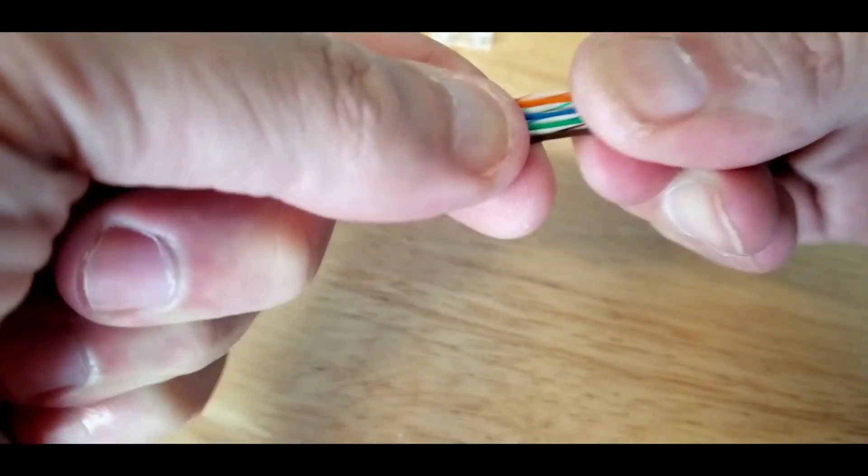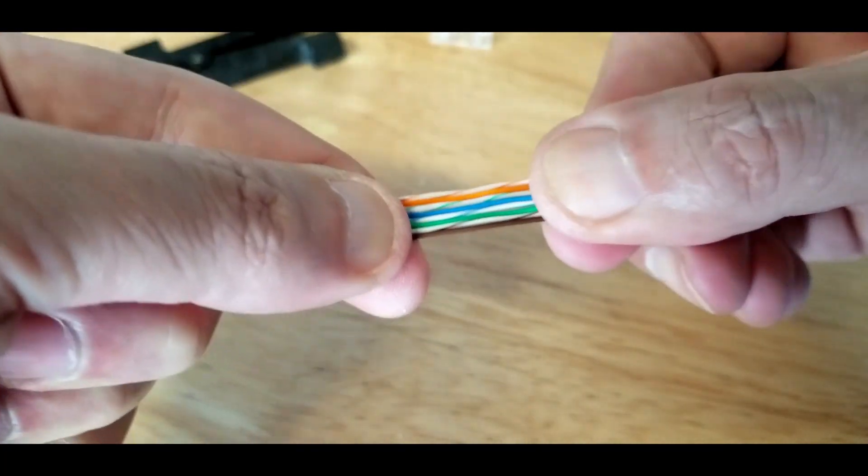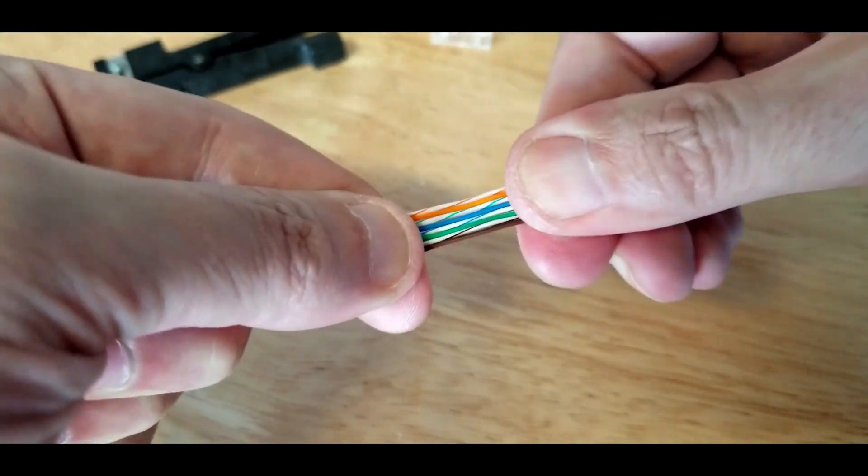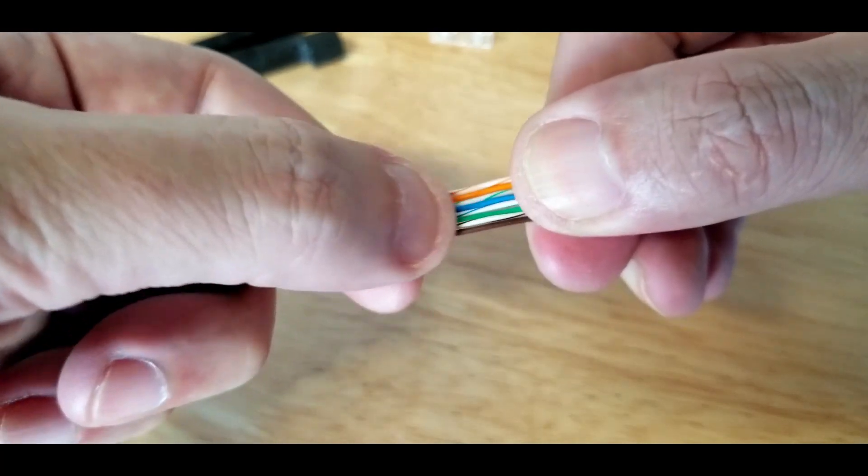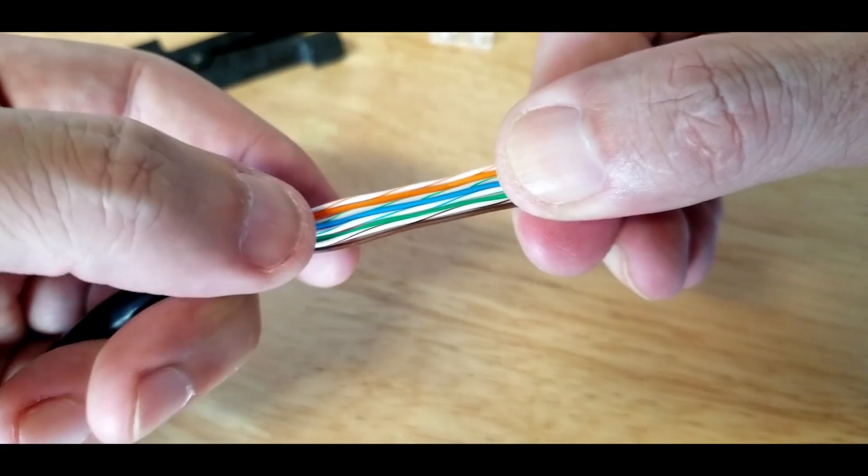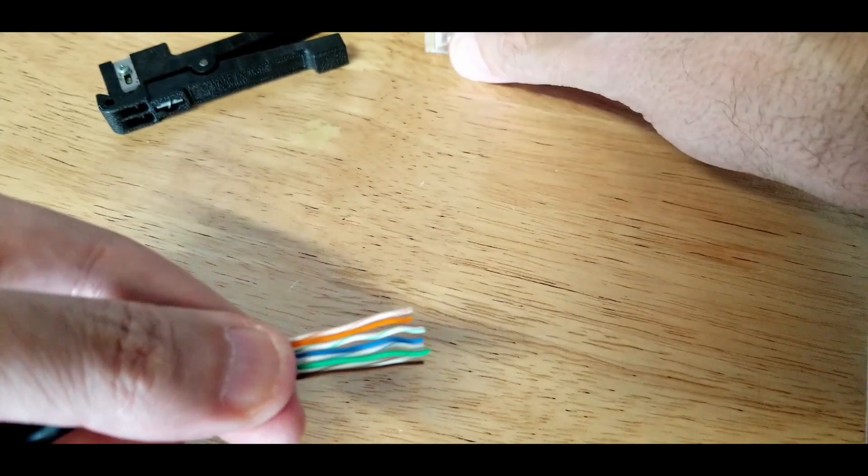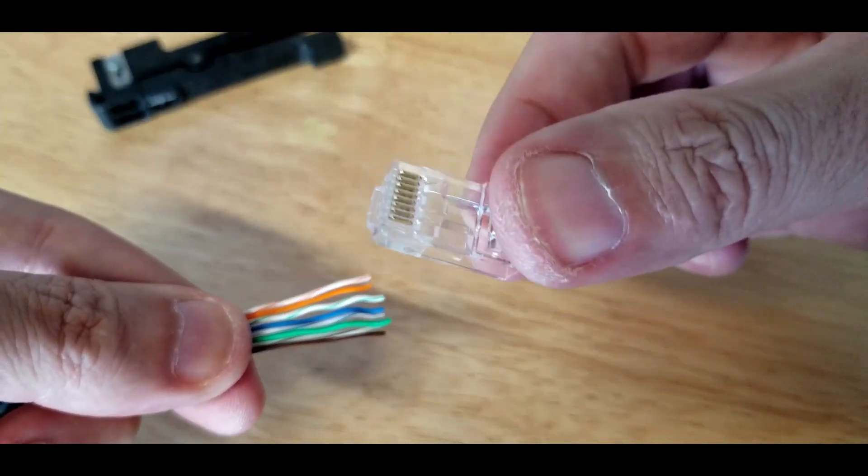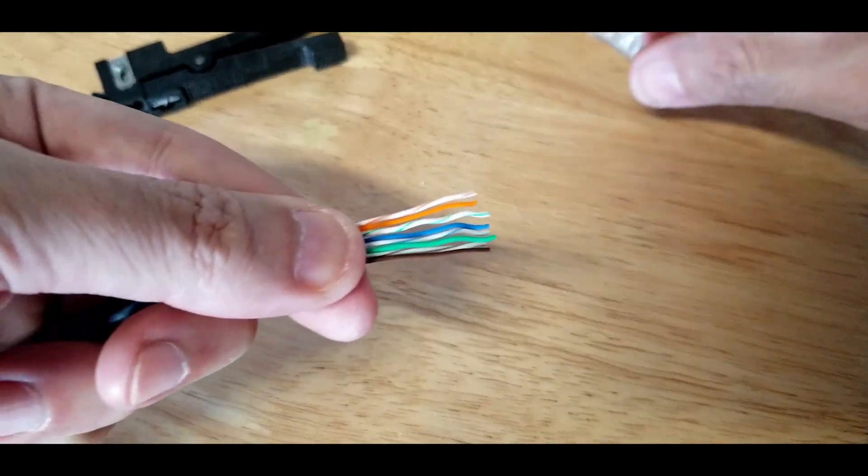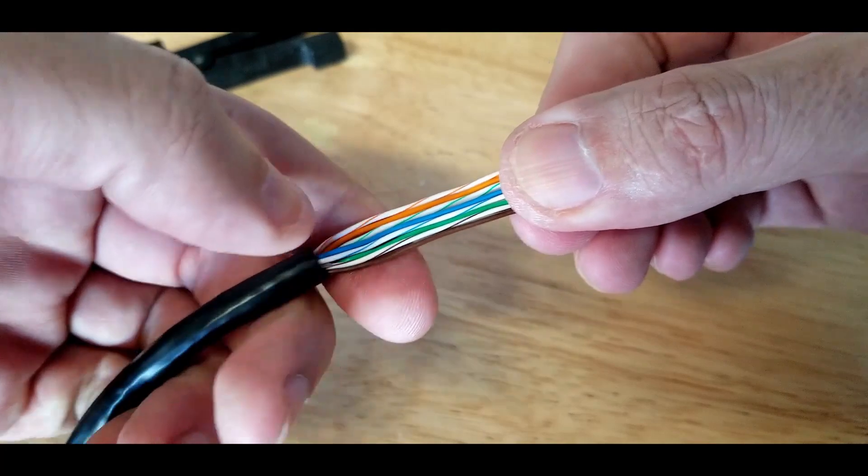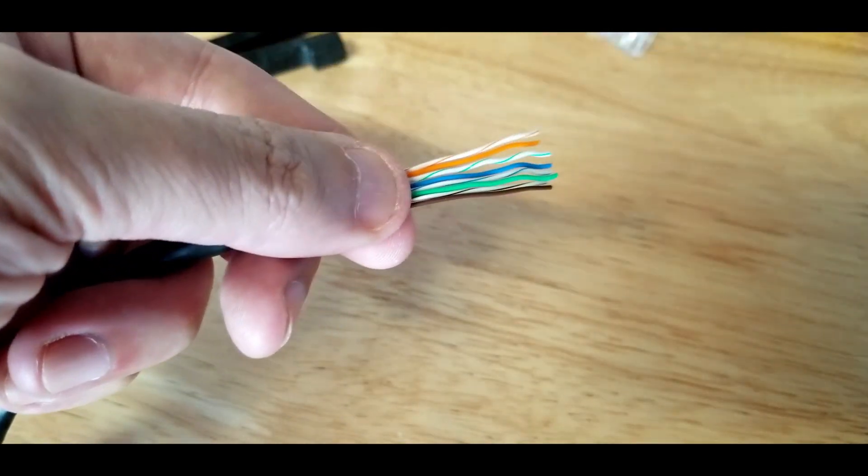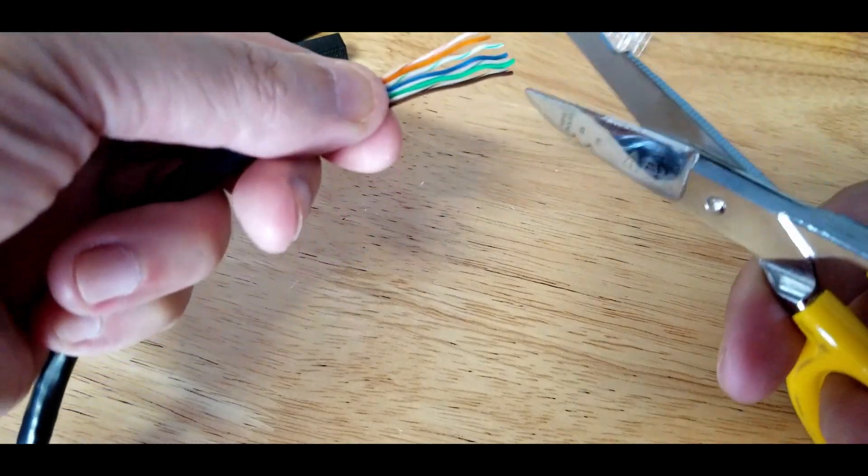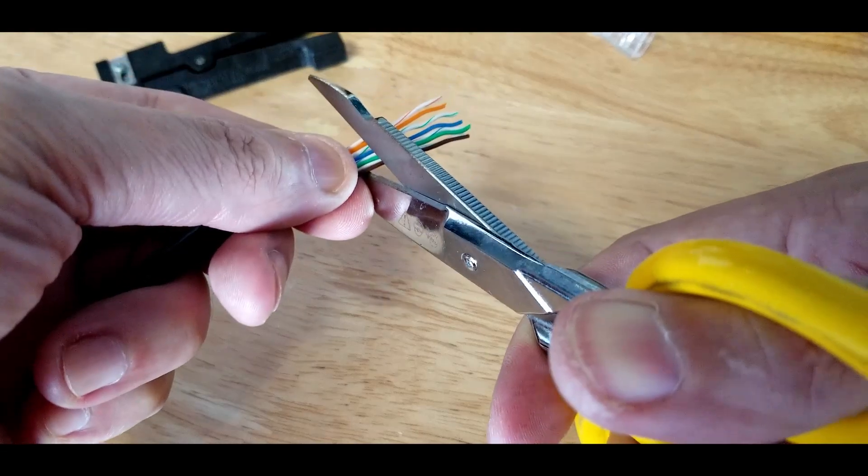So this is, like I was saying earlier, this is pass-through. So the trick here is there's no need to worry about how far up here you cut because it's going to pass through the end of the connector. You don't have to worry about that. But the trick is to cut this at a slight angle, because if you cut it flush, if you cut it even, then it's going to be a nightmare trying to fit them all into their individual slots.